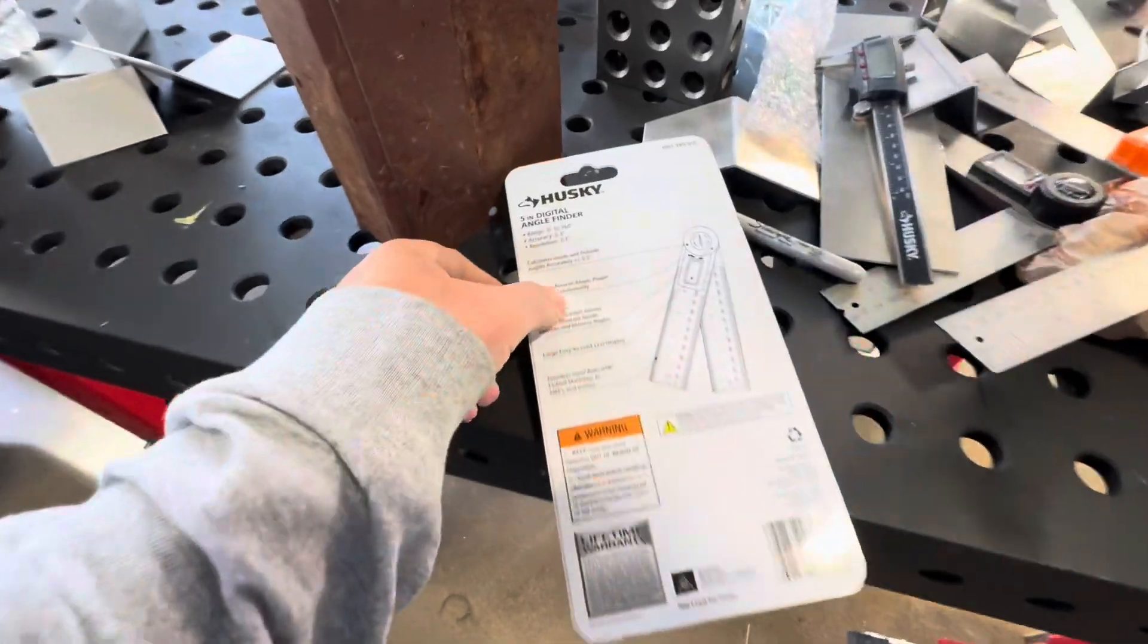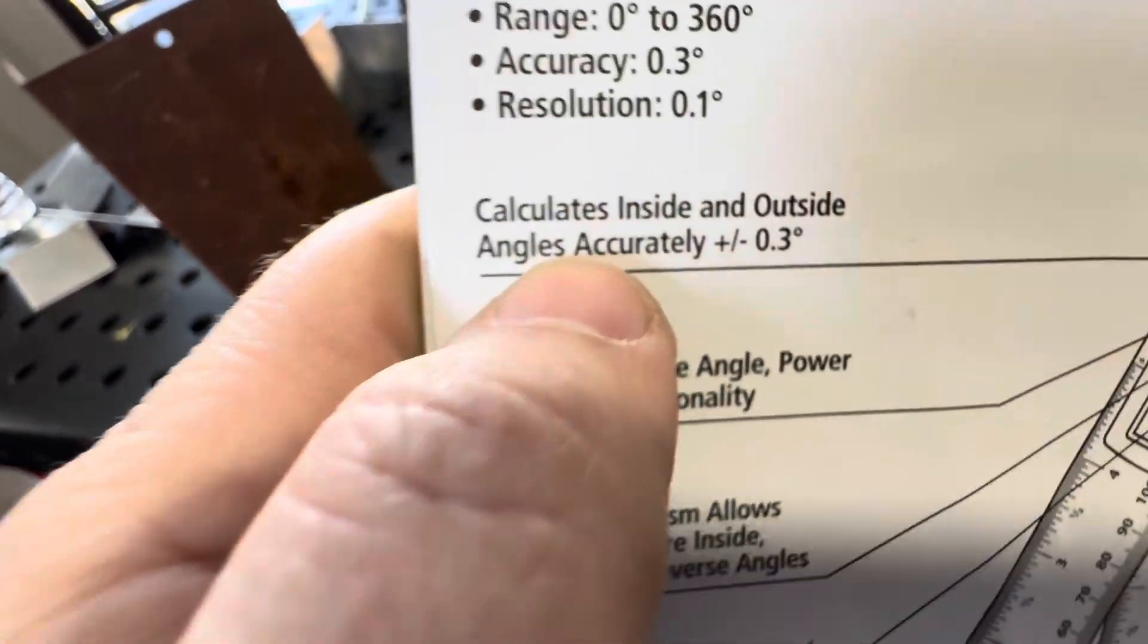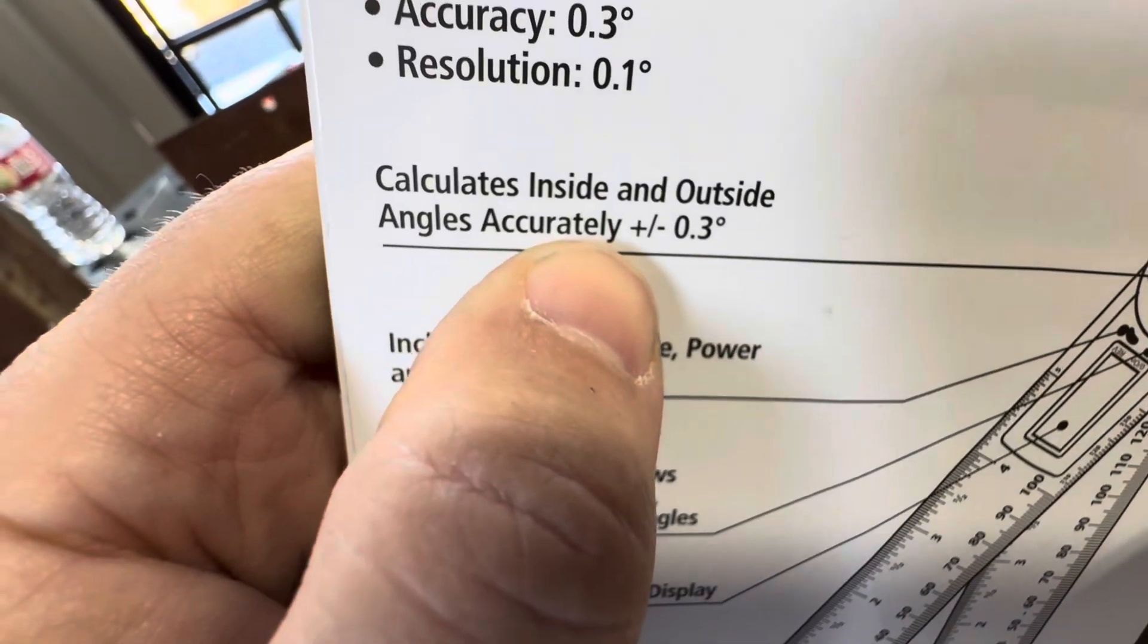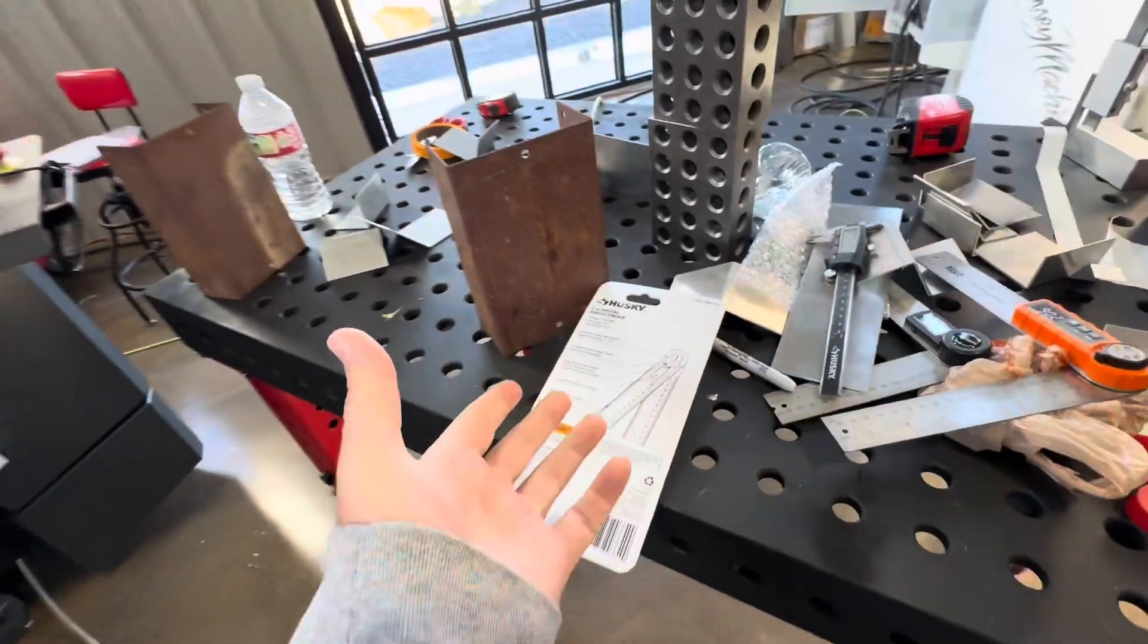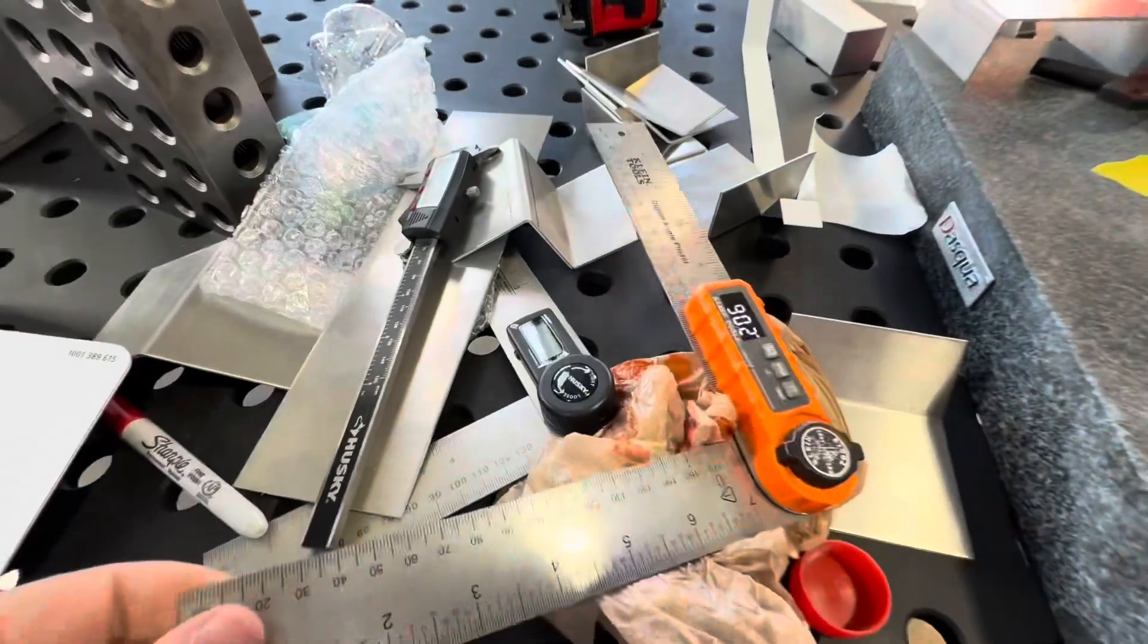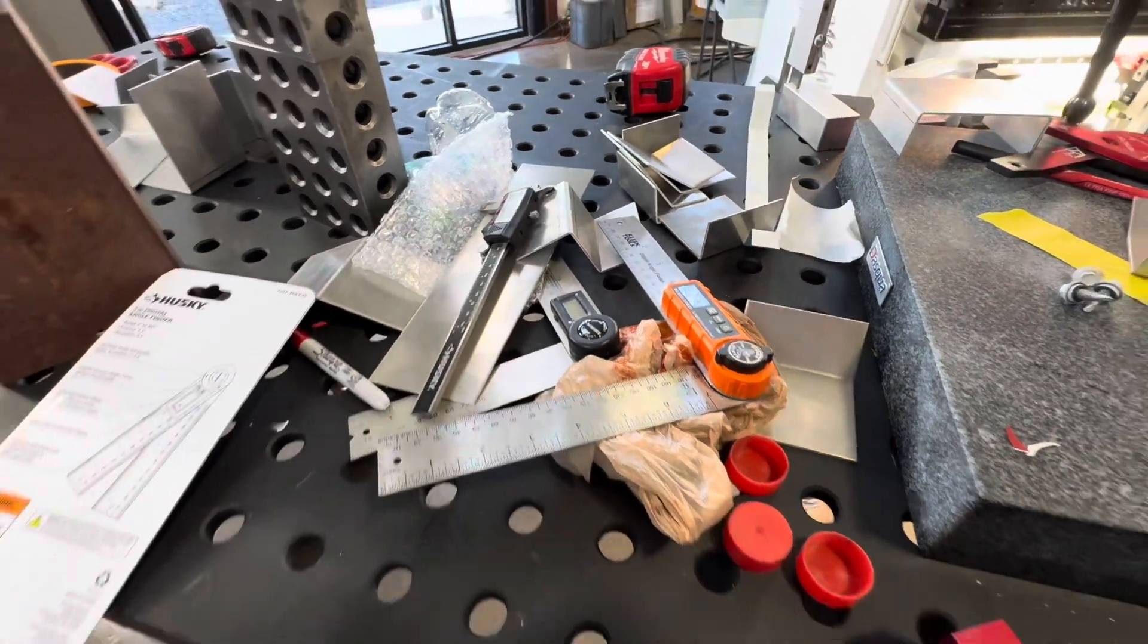So, before anybody gets bent out of shape about 90.2 or whatever, take a look. Angles accurately plus or minus 0.3 degrees. So that's a six-degree swing. So these guys here, they're handy. You can get a rough measurement, but you're not going to get a precision measurement on that.